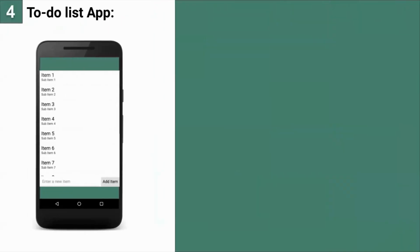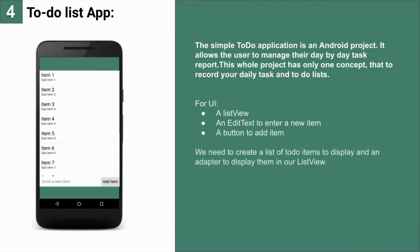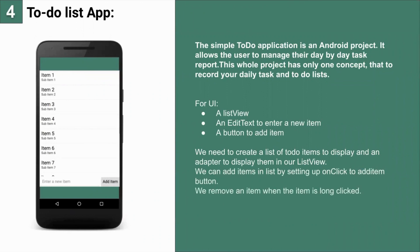The to-do list app is a simple Android project that allows the user to manage their day-by-day task reports. The whole project has one core concept: to record your daily tasks and to-do lists. For the UI part, a ListView and an edit text to enter a new item, and a button to add items. We need to create a list of to-do items and an adapter to display them in the ListView. Items can be added via an on-click listener on the add button, and removed when an item is long-clicked using the onItemLongClick override method.